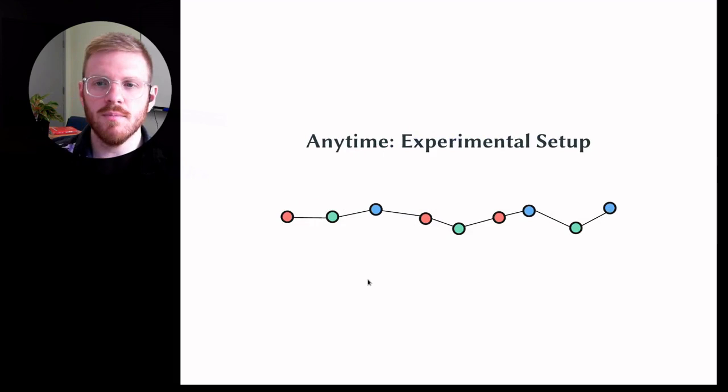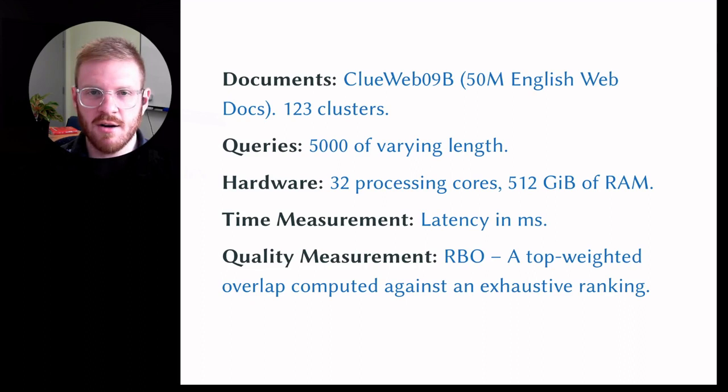A few notes on our experimental setup. We looked at a couple of collections, but here I'm only going to present ClueWeb 9B, which is 50 million English web documents. We had 123 clusters from our index. We used 5,000 queries of varying length on a 32 core machine with 512 gigs of RAM. Everything was run in memory. We measured latency in milliseconds. For quality measurement, we used RBO, which is a top weighted overlap metric, and we compute that against the exhaustive ranking.